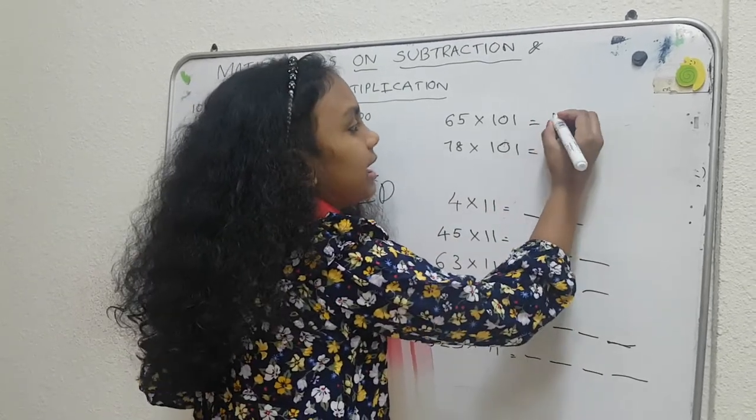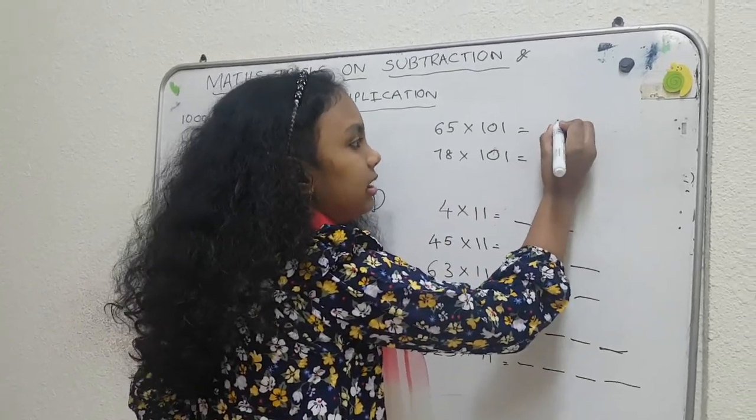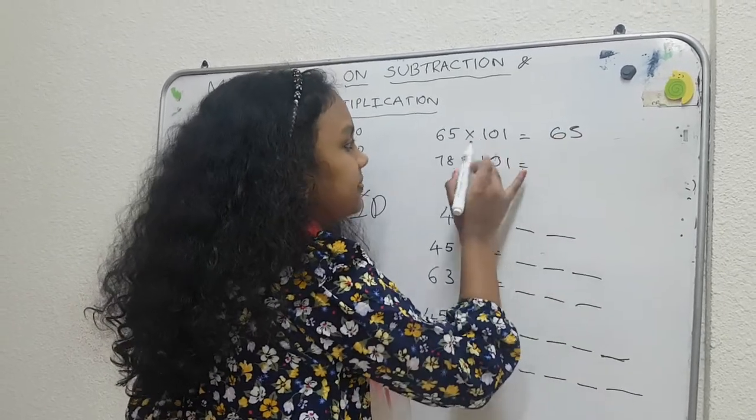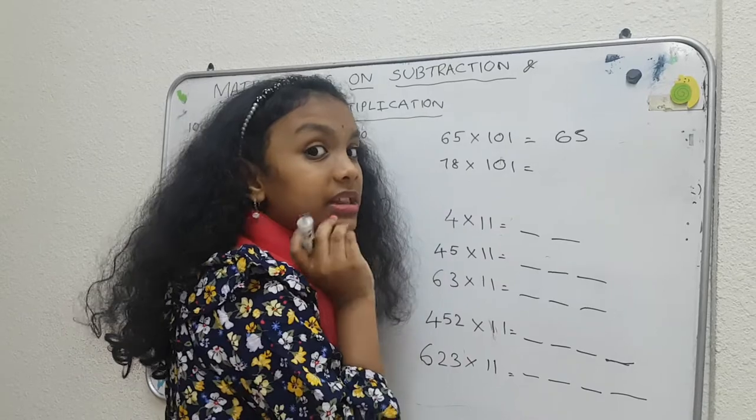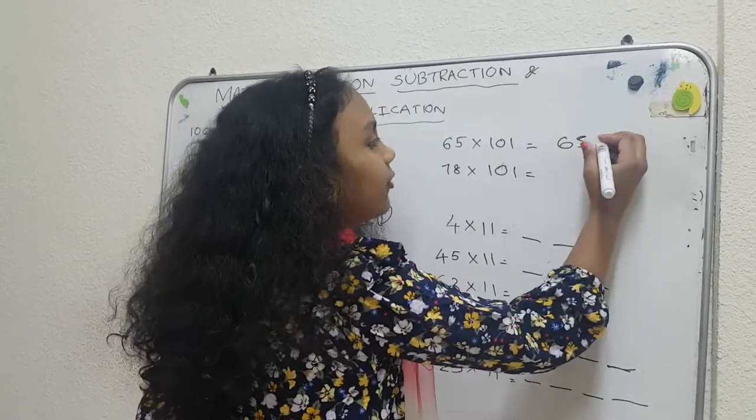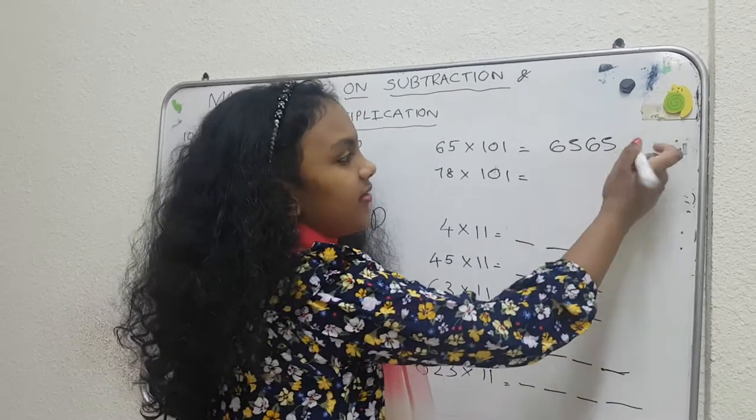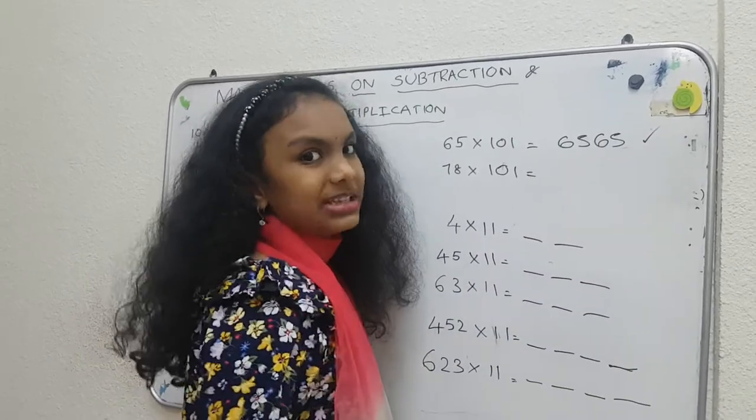If you multiply by 101, just write 65 here, okay? Simply 65. And multiplied by 101, what is the answer? You are thinking, right? Now, we have to put same 65. 65, 65 is the answer. The right way to do it.